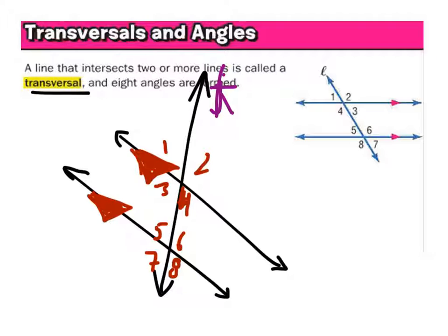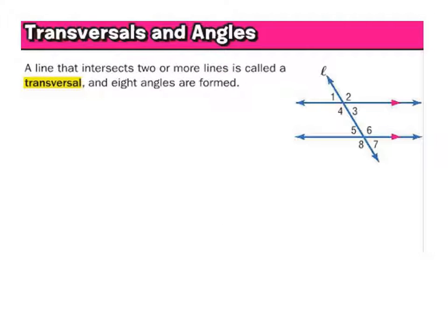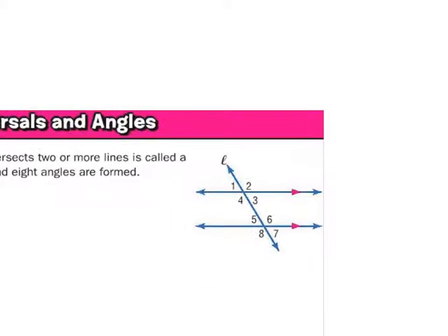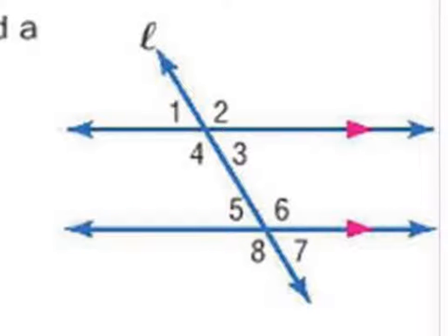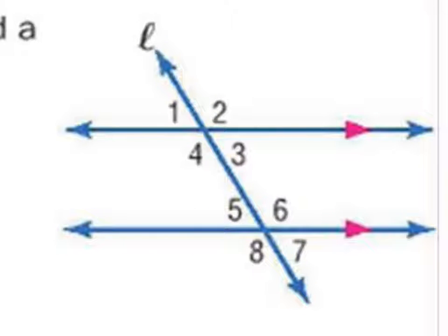Just understand that a transversal line cuts two other — in this case, parallel — lines, so it cannot be parallel to them. We can tell that these two lines are parallel because we have these red arrows here. Since we have those, we know that those two lines are parallel.